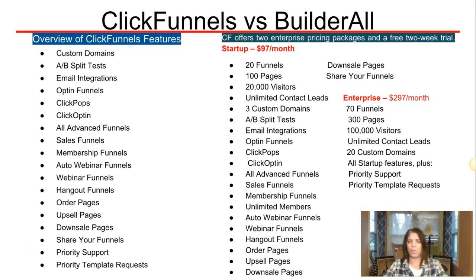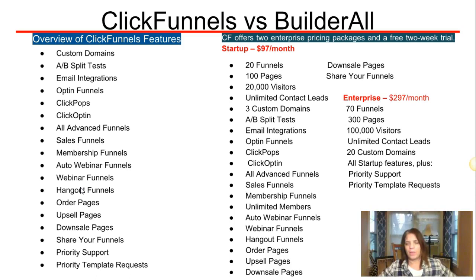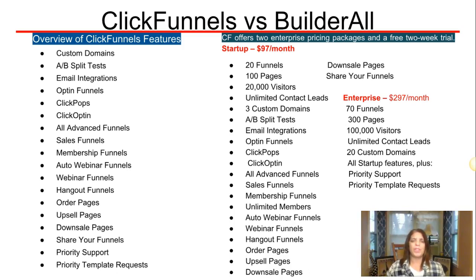The Enterprise plan is $297 a month and gives you 70 funnels versus 20, 300 pages versus 100, 100,000 visitors versus 20,000, unlimited contact leads, 20 custom domains, all Startup features, plus priority support and priority templates. With the $297 plan you also get Actionetics, which is ClickFunnels' built-in autoresponder.